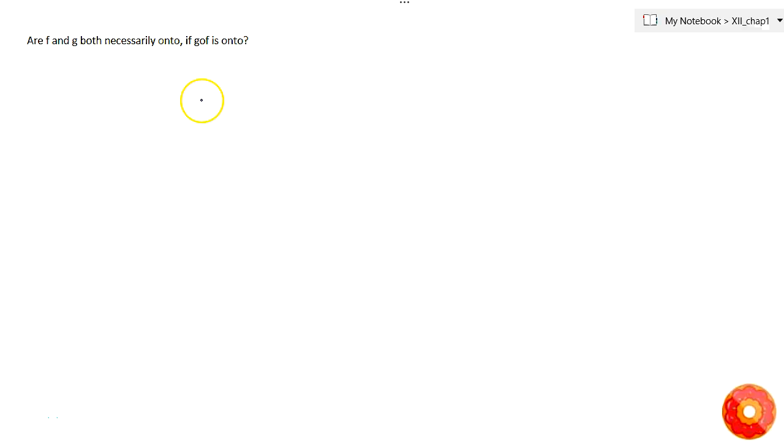In this question, there are two functions f and g, and it is said that g of f is onto in nature. The question asks: if g of f is onto, does it necessarily mean that both f and g need to be onto?